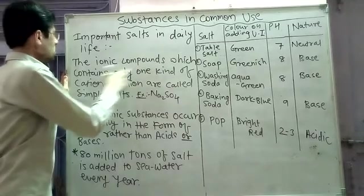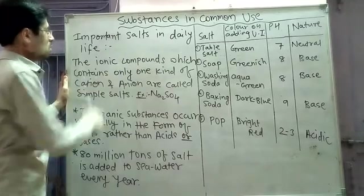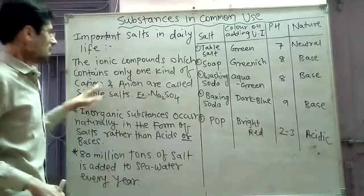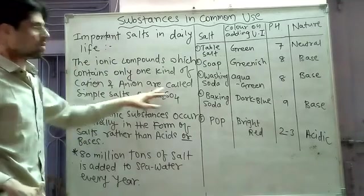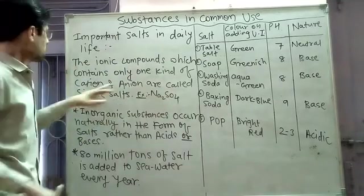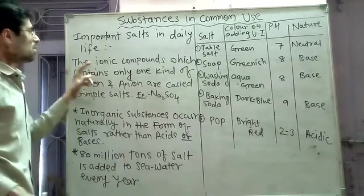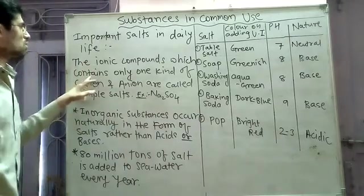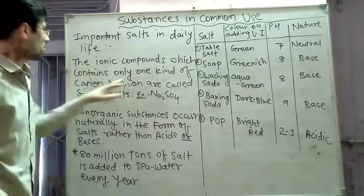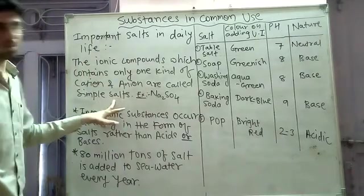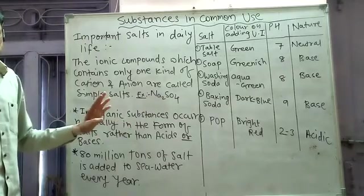The ionic compounds which contain only one kind of cation and anion are called simple salts.